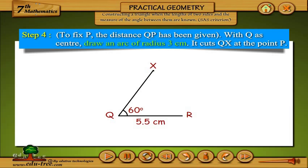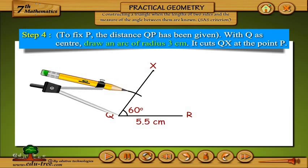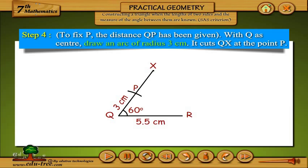Step 4: To fix P, the distance QP has been given. With Q as center, draw an arc of radius 3 cm. It cuts QX at the point P.